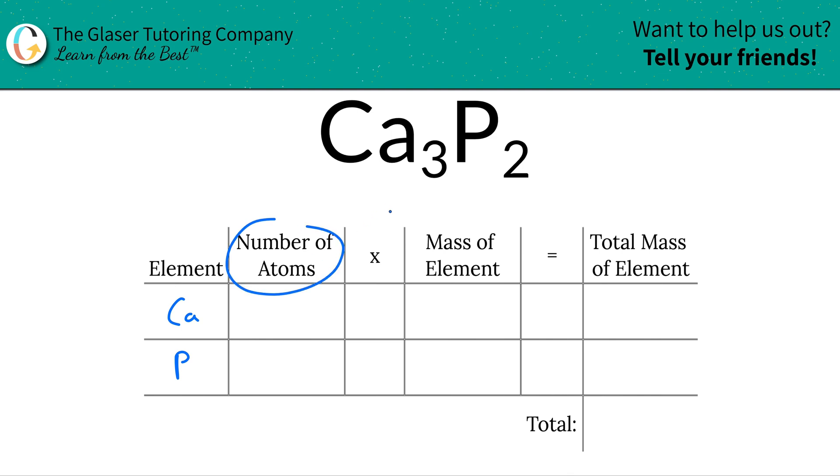Next is then to identify the number of atoms. This is where the subscripts come into play. So the subscript of calcium here is a three. That means we have three calcium atoms and then we have two phosphorus.